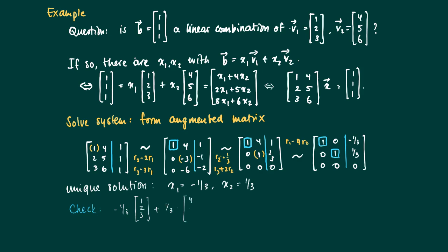And if you just check for the first coordinate, minus one third plus four over three equals of course one, etc. And you can check this for the other coordinates as well.